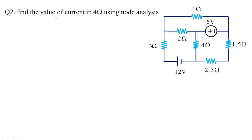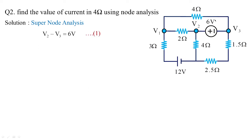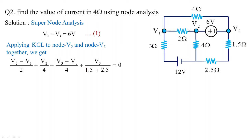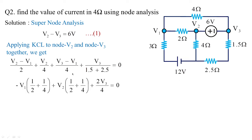Let us go with the next example: find the value of current in 4 ohms. Again, is it a super node problem? Yes, because 6 volts is shared between this point and this point, and there is no other parameter between these two nodes other than 6 volts. So it becomes a super node. The node voltages are V1, V2, V3. First: V2 minus V3 = 6 volts — because the positive of 6V is connected to V2 and negative to V3. Now collect the parameters connected to node 2 and node 3 together: (V2 minus V1)/2 is one branch current, V2/4 is another, (V3 minus V1)/4 is one more, and V3/(1.5 + 2.5) another. Simplifying: minus 3·V1 + 3·V2 + 2·V3 = 0.